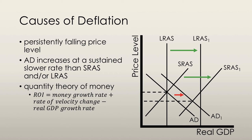This is displayed graphically, where a below-full employment equilibrium puts downward pressure on the price level. Referring back to the quantity theory of money, we can see that if money grows slower than the rate of velocity change minus the real GDP growth rate, deflation will occur.